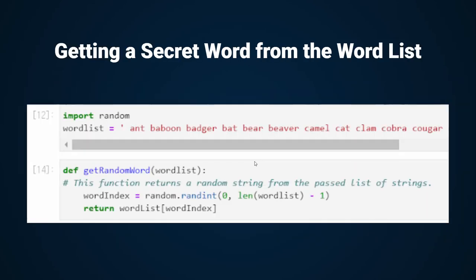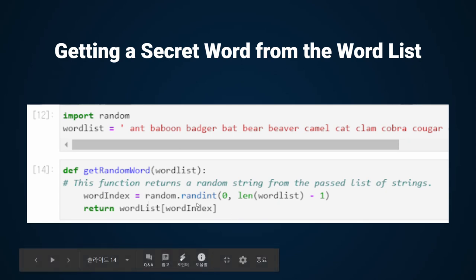Now we are going to create a function that returns a random string from a passed list of strings. This function will return a single secret word from the list in word_list. I use a define function here and make the function choose a random word contained in the word_list. I also use the length method, going from index zero to the length of word_list minus 1. The minus 1 is because every index has a difference of negative 1 from its value. The function returns word_list at word_index, so it will give your Hangman game a random word.